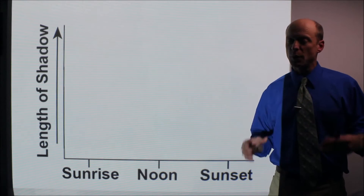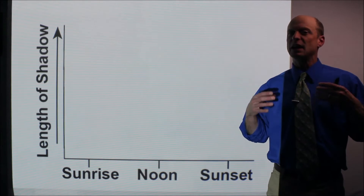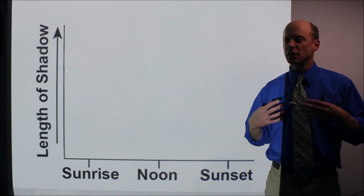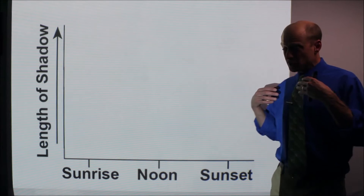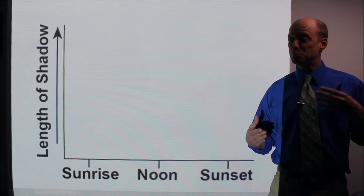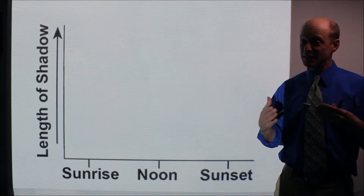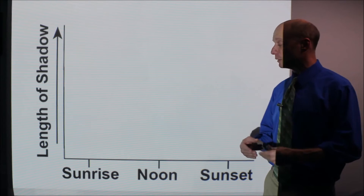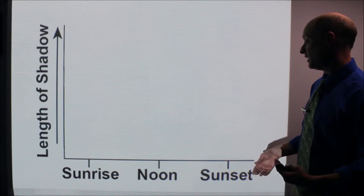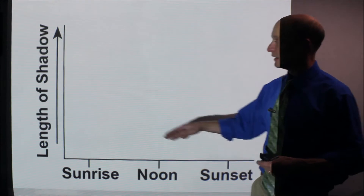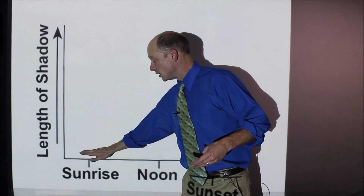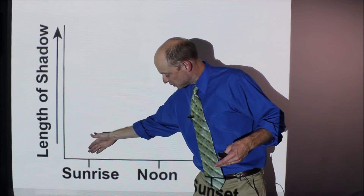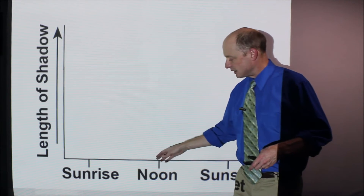I think those videos really show it. This is a tough topic — watch them again if you need to really get it into your brain to understand it, because you experience the Sun every single day but it's still really hard. Here's the type of question you may get: look at the length of shadow. This would be short shadow, long shadow throughout from sunrise to sunset, and this is solar noon.